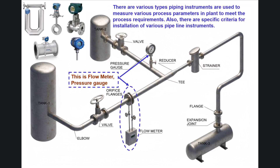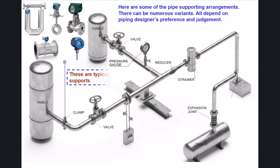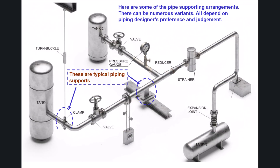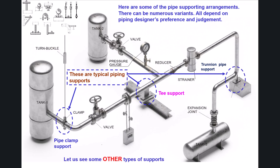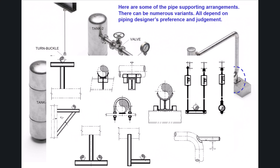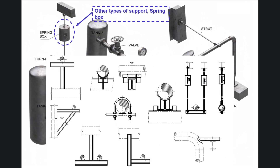Next, we shall look at how to support the pipe and its components. Typical piping supports include pipe clamp support, T-support, trunnion pipe support, etc. There can be numerous variants — all depending on the piping designer's preference and judgment. Other types of supports include spring box support. These are common supports used in piping.